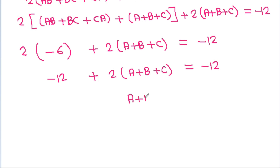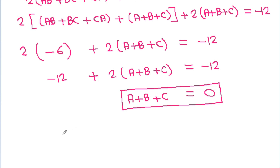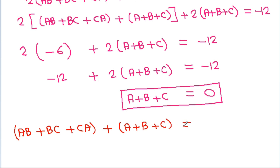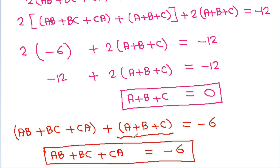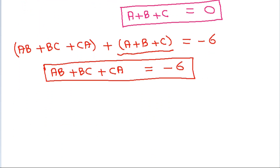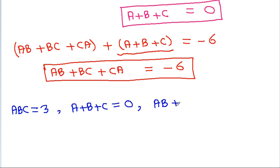Since ab+bc+ca plus a+b+c equals minus 6, we substitute: 2 times (minus 6) plus 2 times (a+b+c) equals minus 12, giving minus 12 plus 2(a+b+c) equals minus 12, so a+b+c equals 0. Therefore ab+bc+ca equals minus 6. So we get: abc equals 3, a+b+c equals 0, and ab+bc+ca equals minus 6.